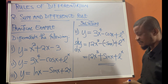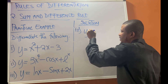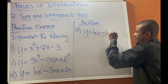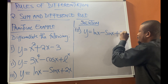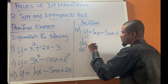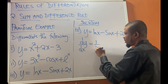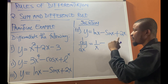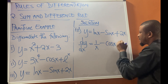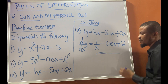In the last example, we have y equal to ln x minus sin x plus 2x. To find dy/dx: differentiate ln x, we get 1/x. Maintain the sign: minus. By sum and difference rule, maintain the sign, differentiate sin x — you get cos x. Maintain the sign: plus. Then differentiate 2x — we get 2. So dy/dx equals 1/x minus cos x plus 2.